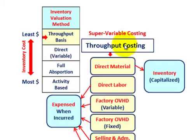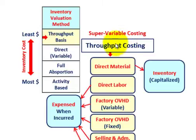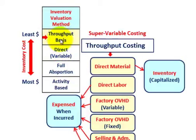What we're going to be going over here is throughput costing, which could also be referred to as super variable costing. We're going to look at cost flows regarding our inventory, how we calculate our inventories for throughput costing, and how we determine operating income based on this costing method. Throughput costing is one of the inventory valuation methods used in cost accounting, and it results in the least number of dollars included in your inventory cost.